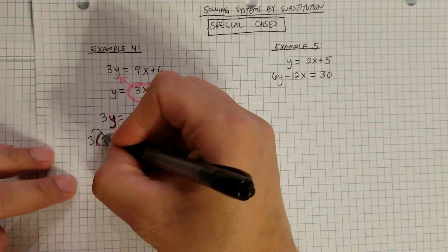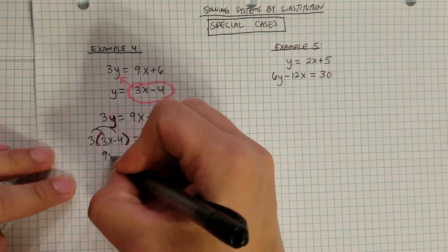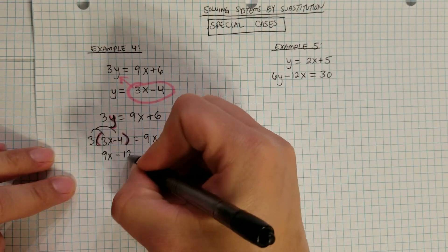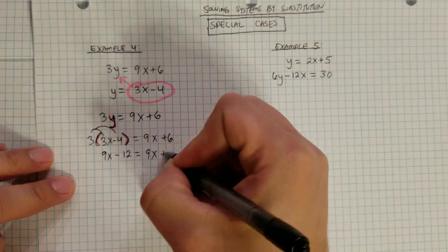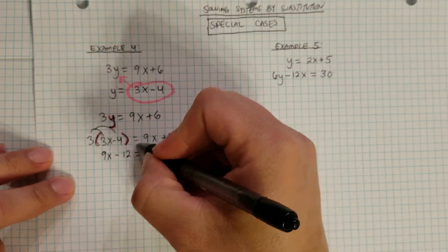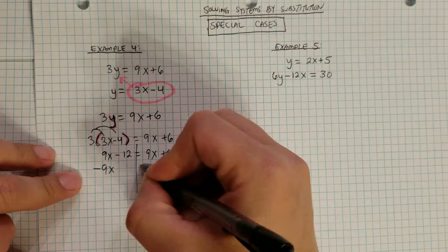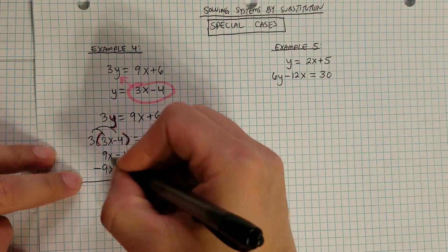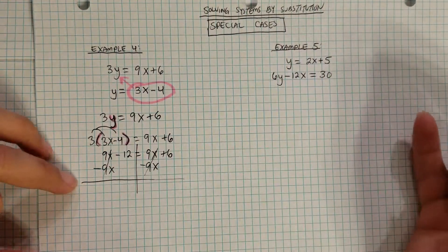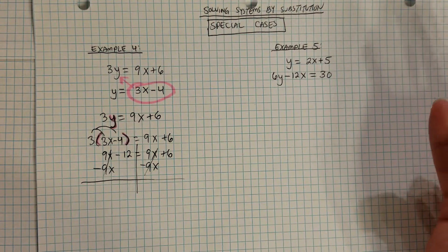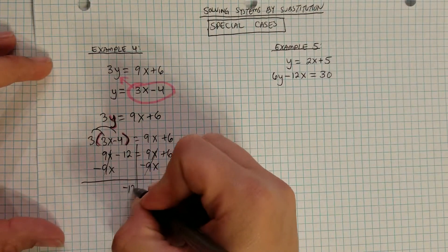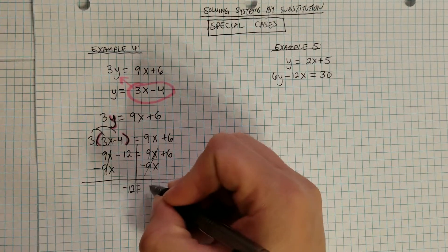Now, something weird happens when I solve this. So this becomes 9x minus 12 is equal to 9x plus 6. So when I try to solve for x, I subtract 9x on both sides. So minus 9x minus 9x, and then this goes away. So the variable goes away. Everything goes away. All we're left with is this equation, negative 12 is equal to 6.